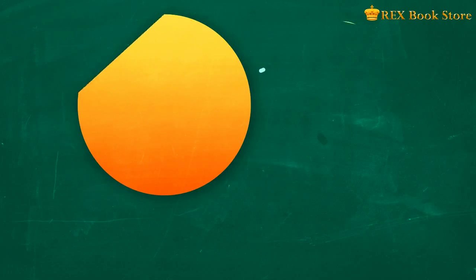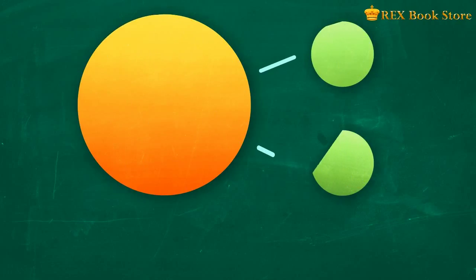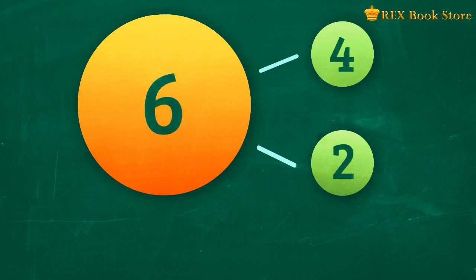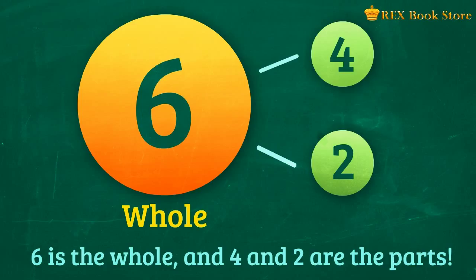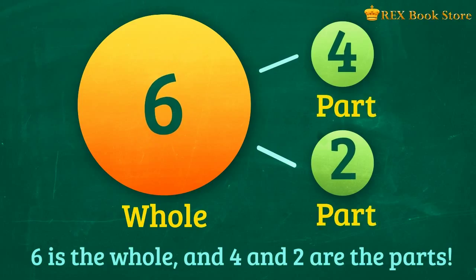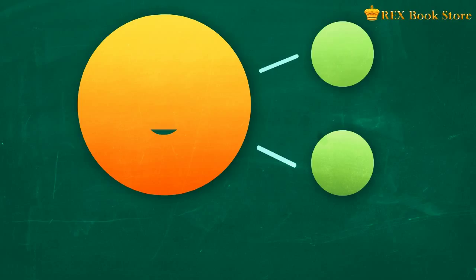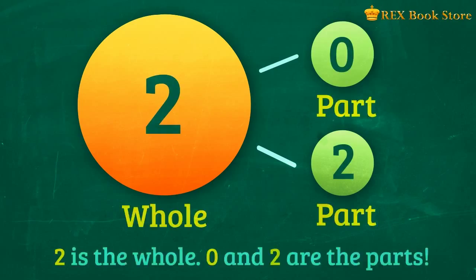Let's practice what you have learned so far. Can you tell me which number represents the whole and which represents the parts? 6 is the whole and 4 and 2 are the parts. Let's try it again — can you name the whole and the parts? Did you get it correctly?